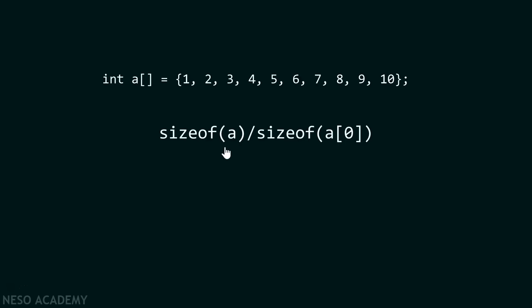sizeof(a) we already know is forty bytes in this case. And sizeof(a[0]) is four bytes. In order to calculate how many elements are there in this array, we need to divide forty by four which gives me ten. Which is the correct answer. But why this works?